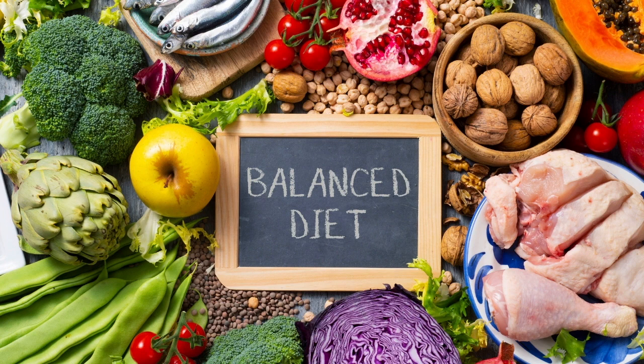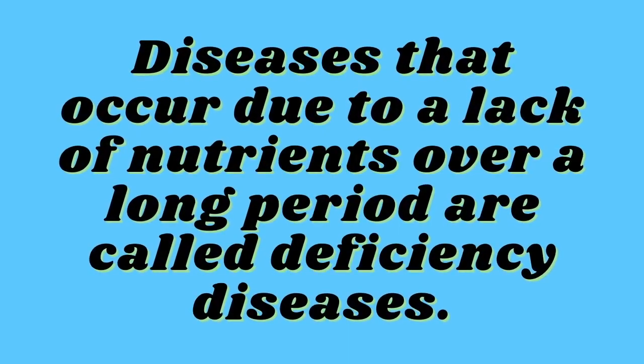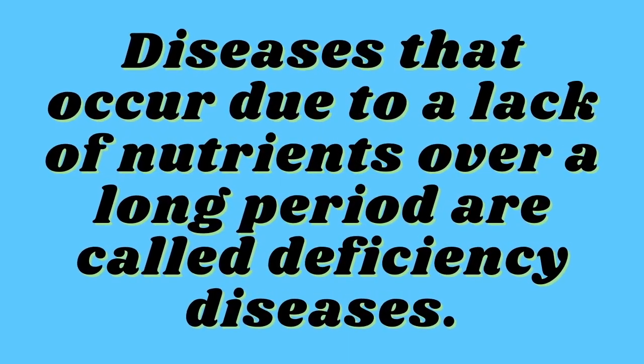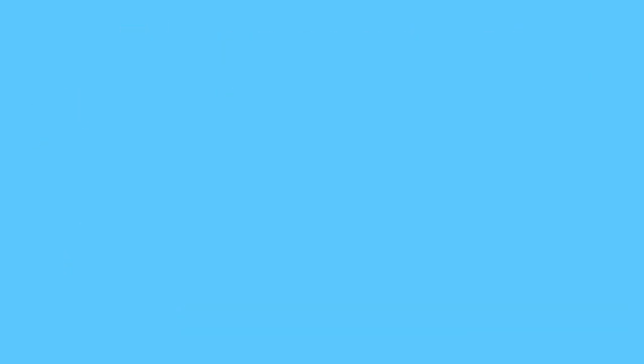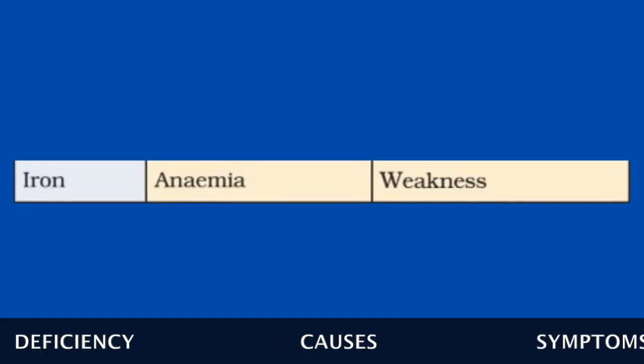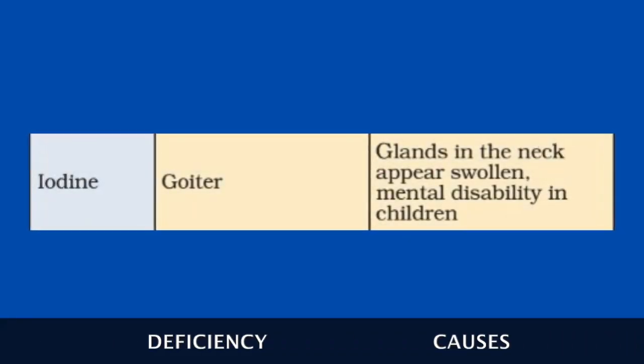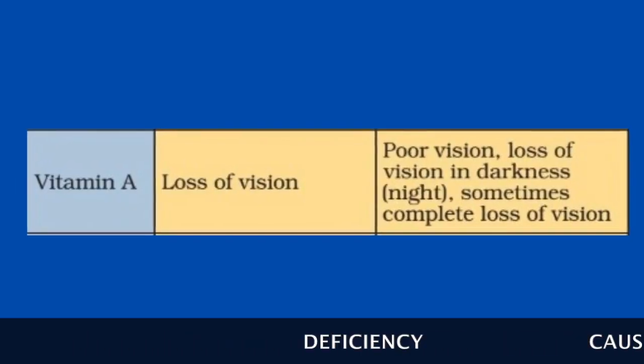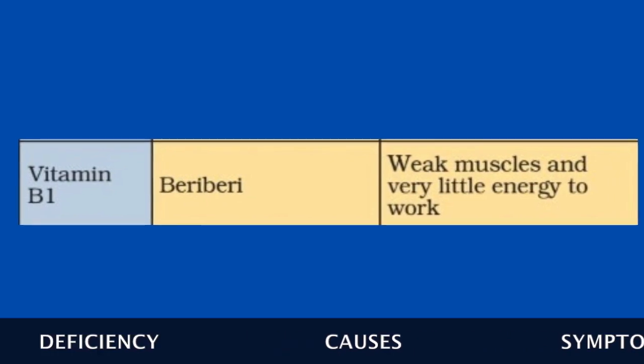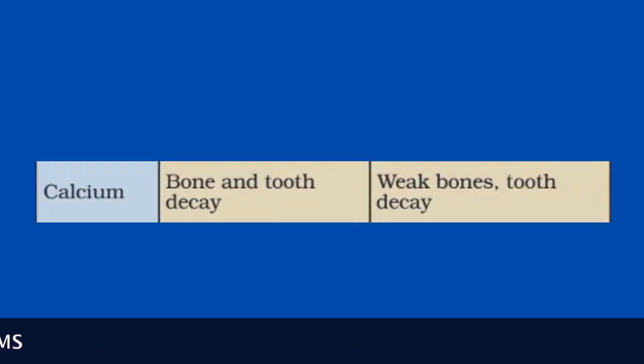For growth and maintenance of good health, our diet should have all the nutrients needed by our body in right quantities — such a diet is called a balanced diet. If the food does not contain a particular nutrient for a long period of time, the person may suffer from its deficiency. Diseases that occur due to lack of nutrients over a long period are called deficiency diseases. Lack of carbohydrates and proteins causes malnutrition, visible in the form of poor growth. Vitamin A deficiency causes night blindness; Vitamin B deficiency causes beriberi, which leads to weak muscles and nerve disorder.